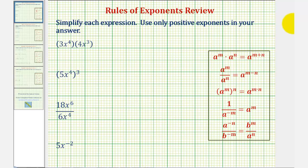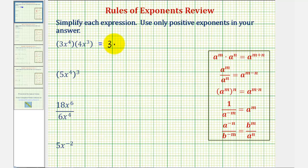We want to simplify each expression using only positive exponents. We first have 3x to the fourth times 4x to the third. Since 3x to the fourth means 3 times x to the fourth, and 4x to the third means 4 times x to the third, we can change the order of this multiplication and write this as 3 times 4 times x to the fourth times x to the third.